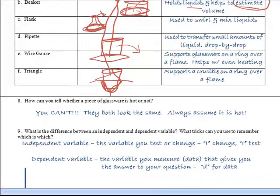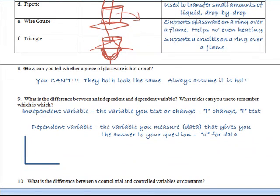Number eight, how can you tell if a piece of glassware is hot or not? The deal is you can't. If you look at a piece of glassware, you can't tell if it's hot or not. It looks exactly the same, so you just always want to assume that it's hot. Alright, what's the difference between independent and dependent variables? What tricks can you use to remember which is which?